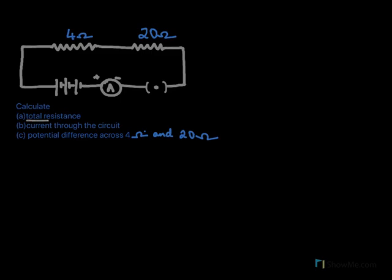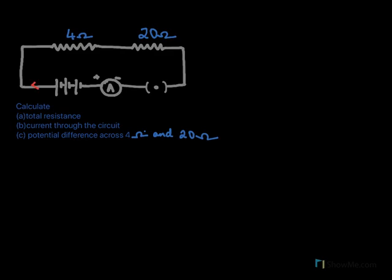In the third circuit, we need to calculate the total resistance, the current through the circuit, and the potential difference across the 4 ohm and 20 ohm resistors. The current flows from the positive terminal into the 4 ohm resistor, and the same current then flows through the 20 ohm resistor. Since the same current flows through both, we can say 4 ohms and 20 ohms are connected in series.